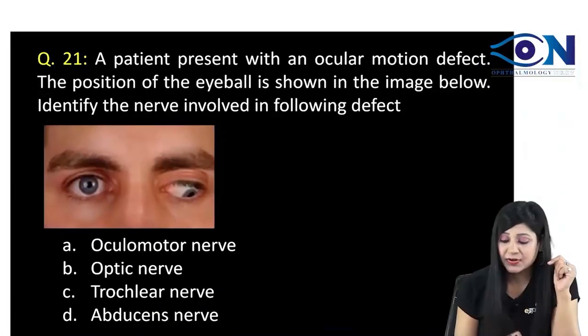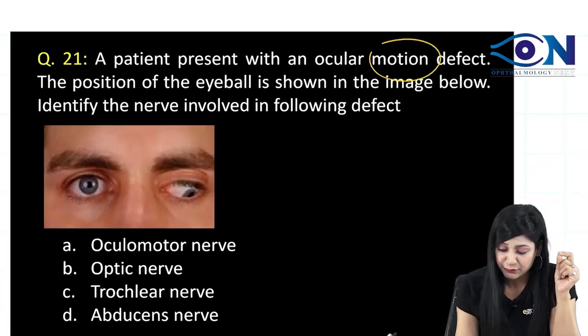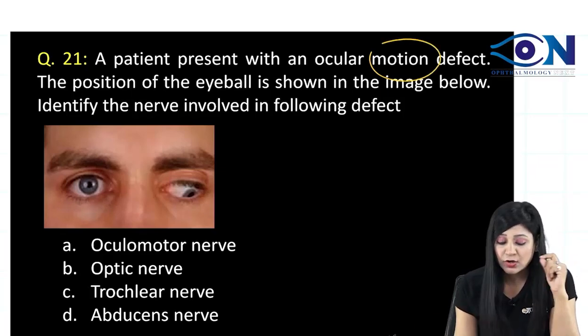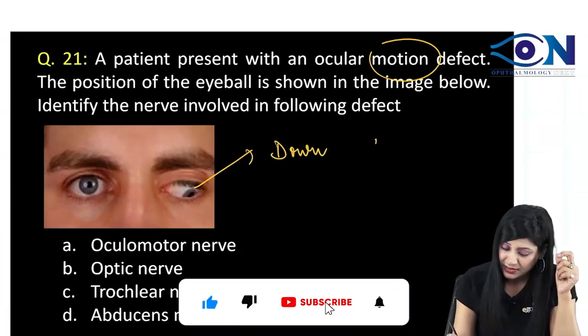Coming to the next question, a patient presents with an ocular motion defect. There is a motility defect and the position of the eyeball is shown. You can see the position is down and out.